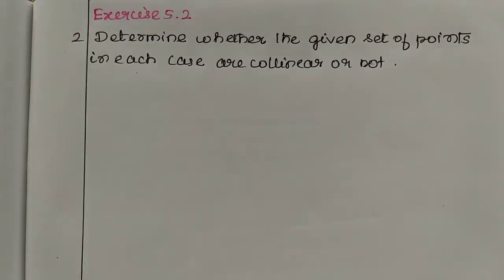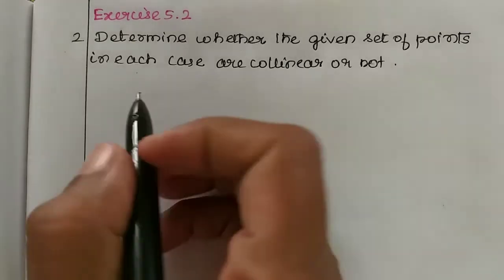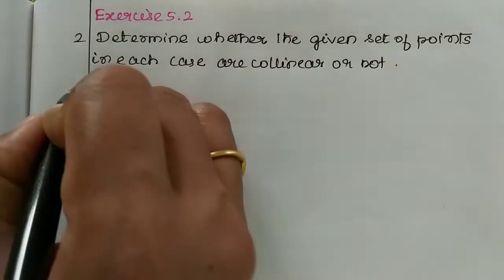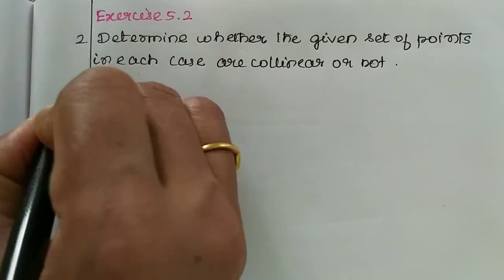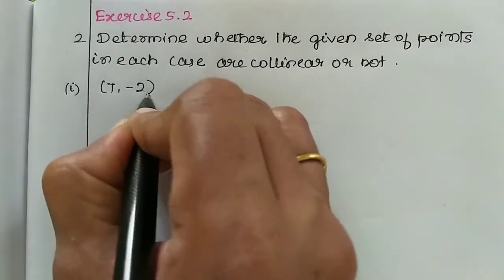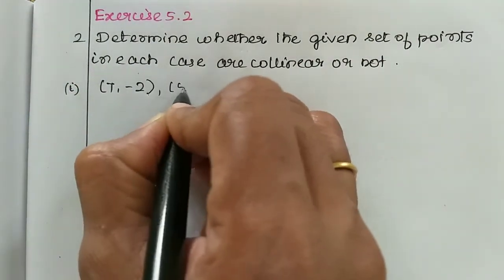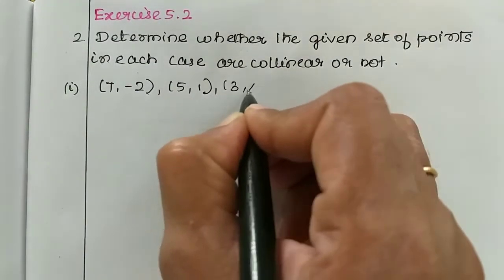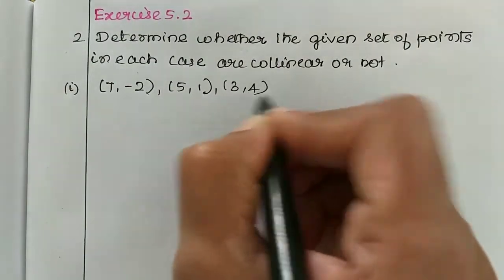Hi students, in this video we will see Exercise 5.2 - to determine whether the given set of points in each case are collinear or not. What is the meaning of collinear? Collinear means the points lie on a straight line. Let's look at the example.